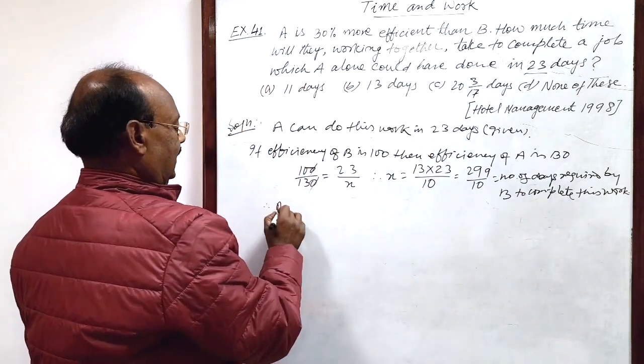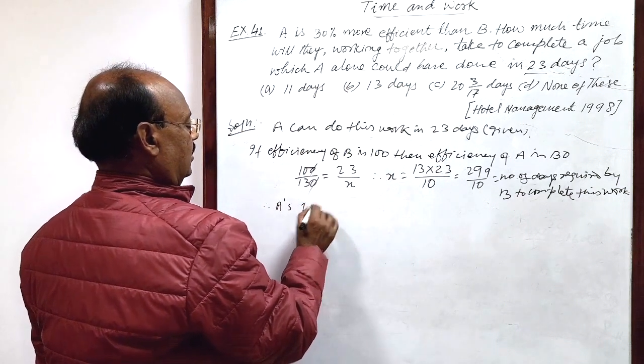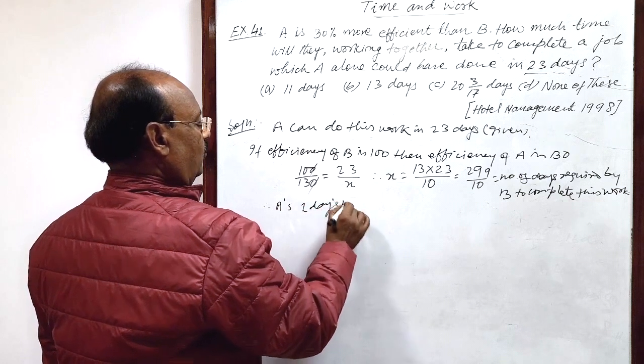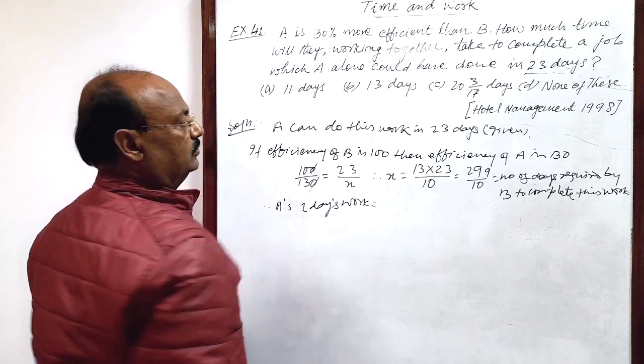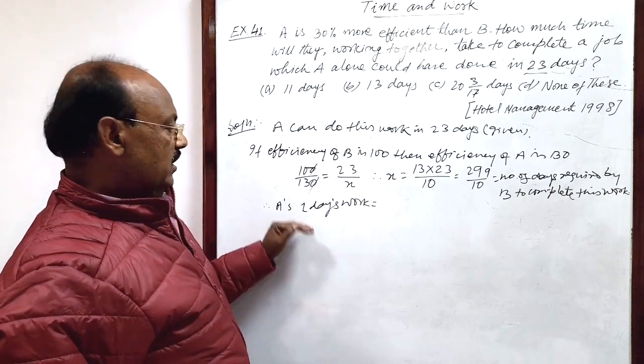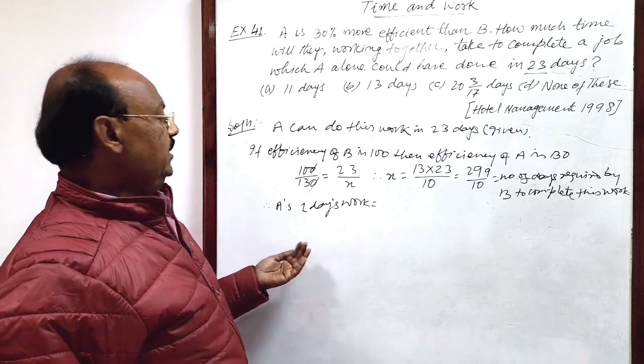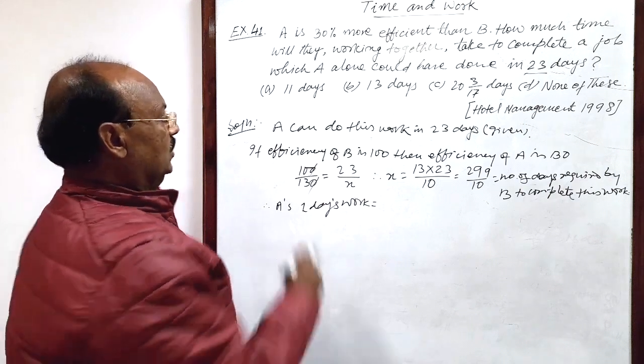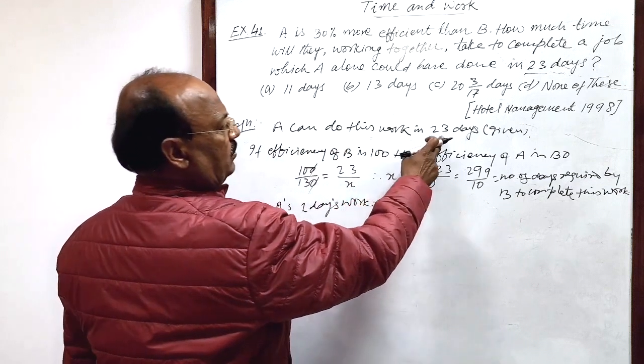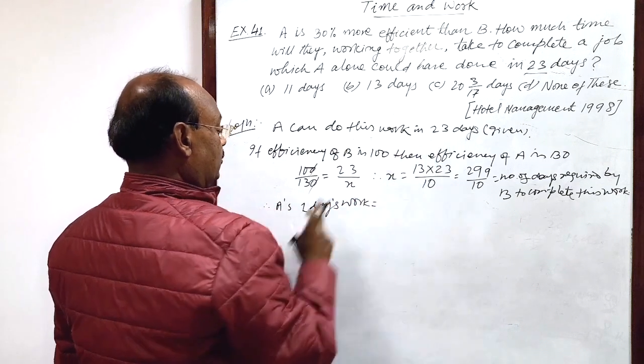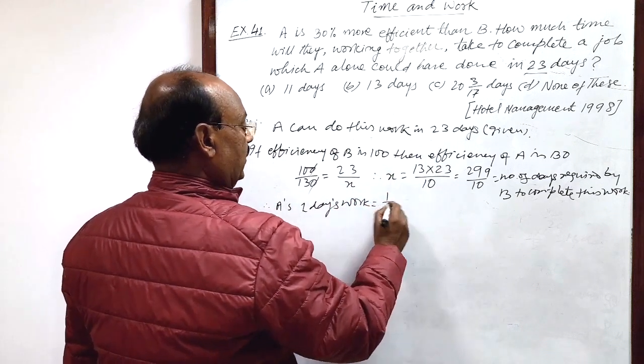So A's one day's work is how much? One day's work is reciprocal of number of days required to complete the job. So A can complete this job in 23 days, so in one day 1 by 23.